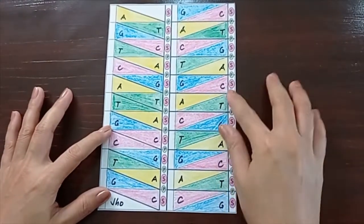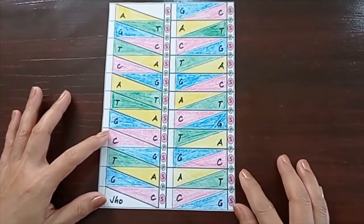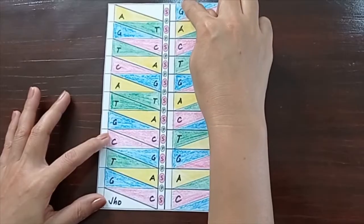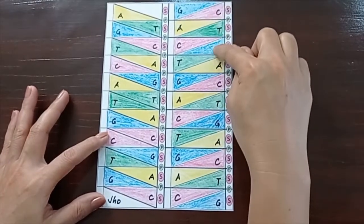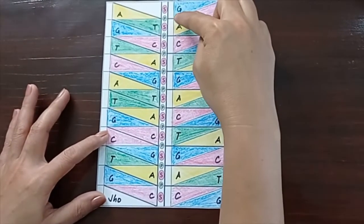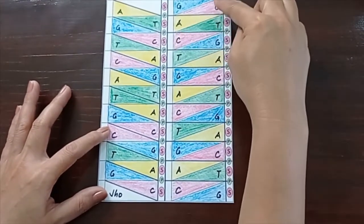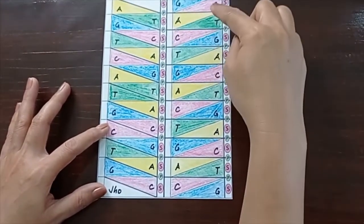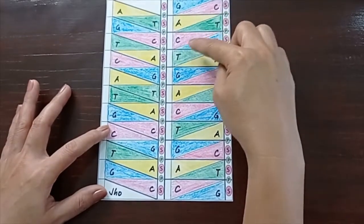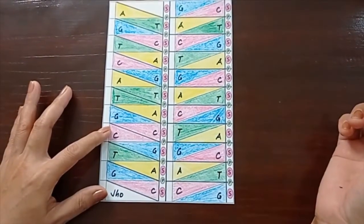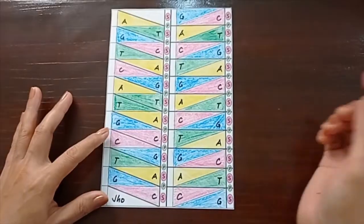Here now is our colored template. Notice the consistency. We have all blue for G, all yellow for A, all red for C, and green for T. We are now ready to fold our template.